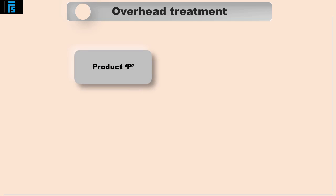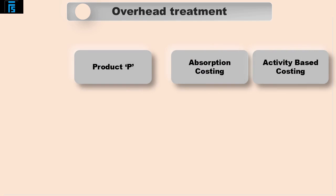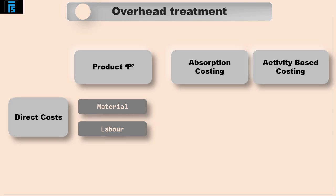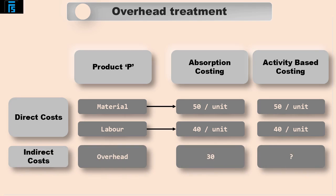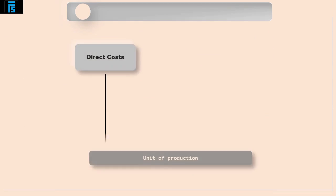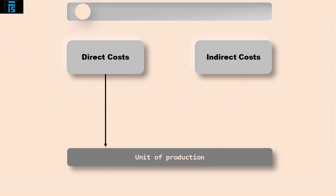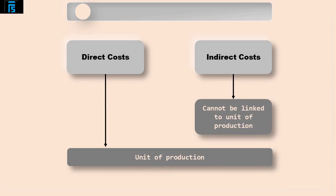Company A manufactures two products, Product P and Product Q. Company A is trying to calculate the cost per unit of production of Product P using an absorption costing system. Material and labour are direct costs — we can link these costs to each individual unit of production. So the material cost is $50 per unit and the labour cost is $40 per unit for Product P. Indirect costs are also known as overheads; these costs cannot be linked directly to each unit of production, so we must find a suitable method of allocating the overhead amongst the units.